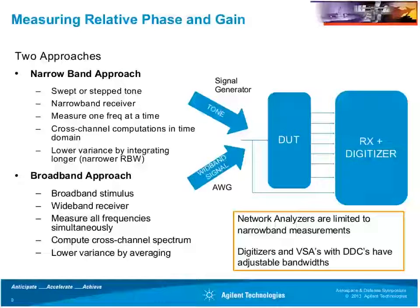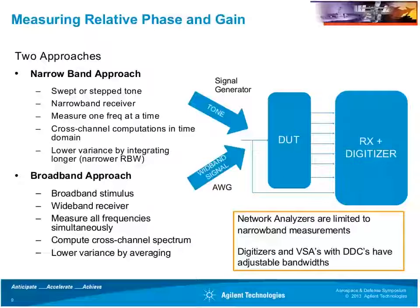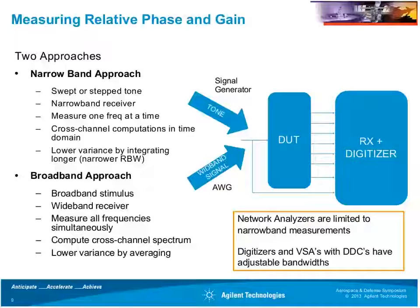The broadband approach is something new and brings forth the advantage of using a digitizer or a wider-bandwidth vector signal analyzer, because they have adjustable bandwidth. You can provide a broadband stimulus with a wideband receiver, and by producing an FFT or spectrum measurement, you can measure all frequencies simultaneously and compute cross-channel spectrums. You can also achieve lower variance equivalently by doing averaging across multiple FFTs.